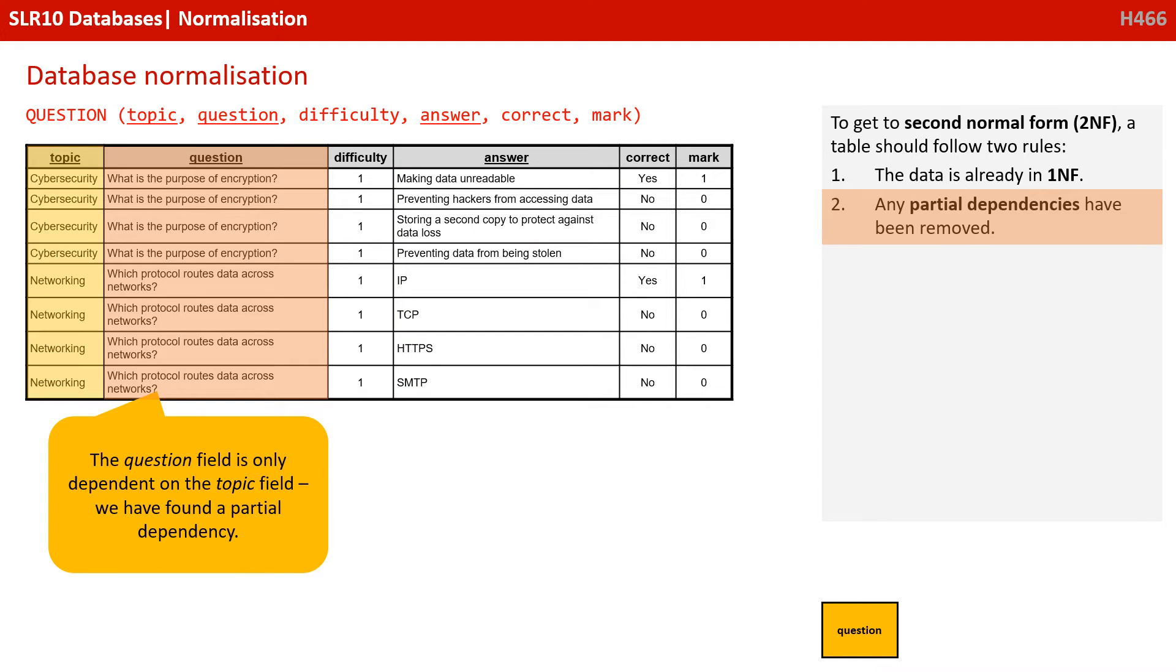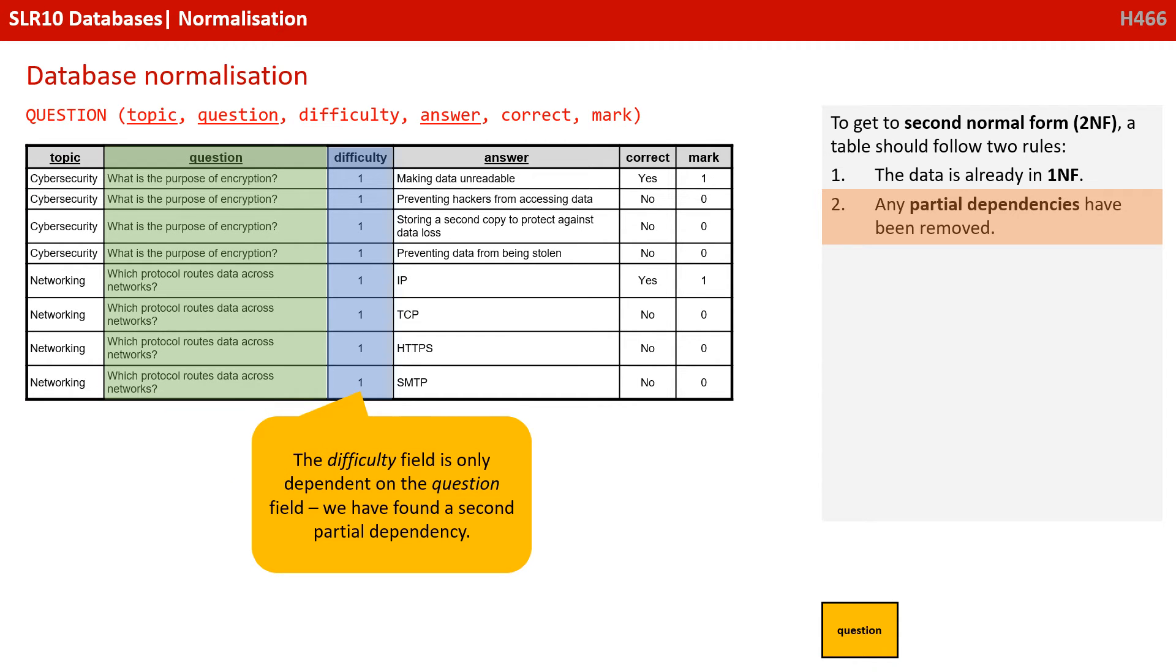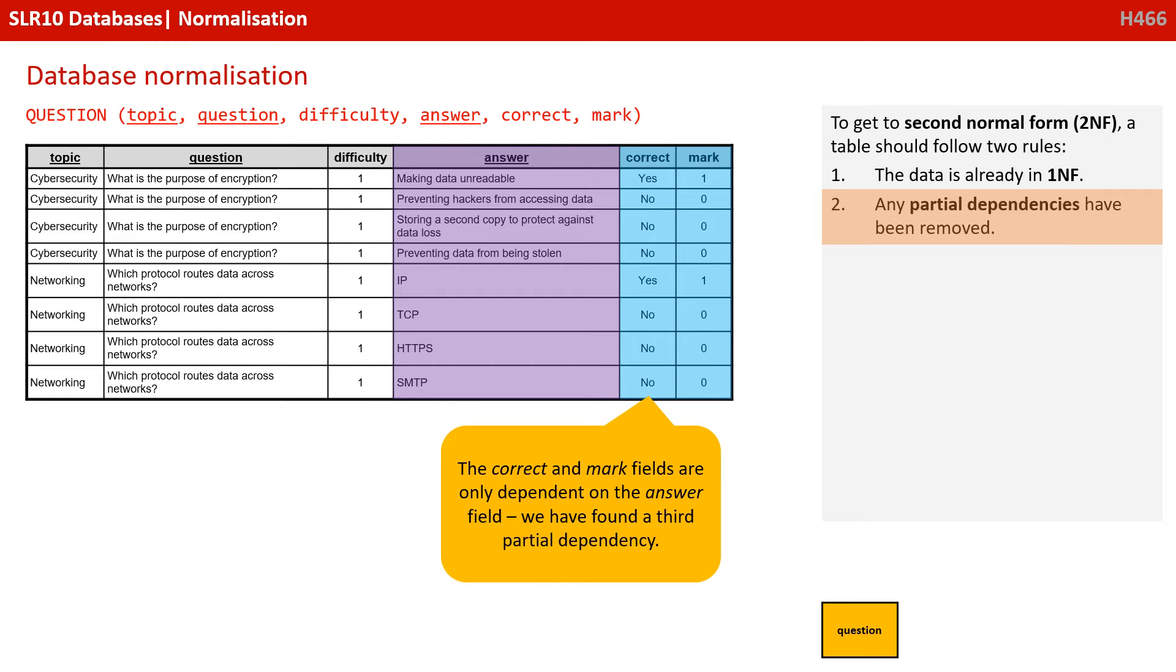To get to second normal form, the table should already be in first normal form, which it is. And any partial dependencies need to be removed. So let's have a look. The question field is only dependent on the topic field, so it's partially dependent. We've found a partial dependency. The difficulty field is only dependent on the question field. We've found a second partial dependency. And the correct marks fields are only dependent on the answer field. So we've found three partial dependencies.